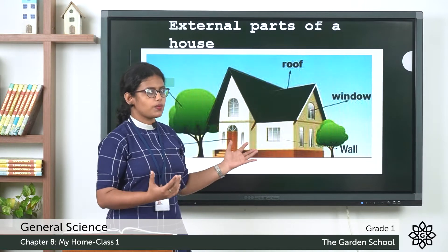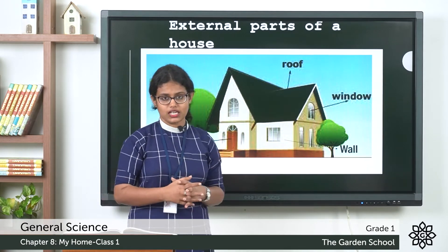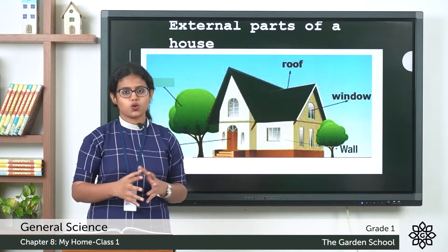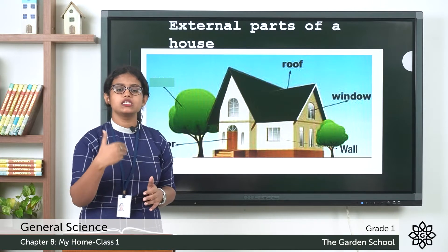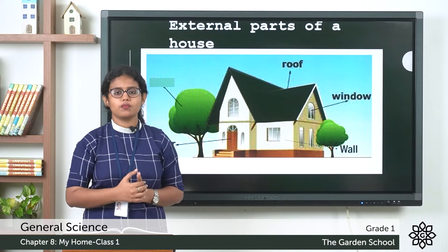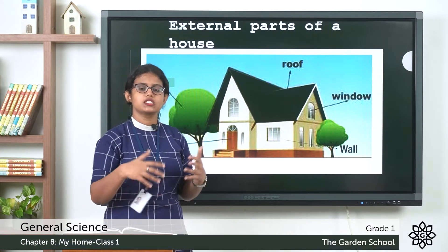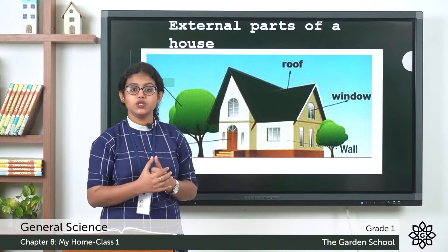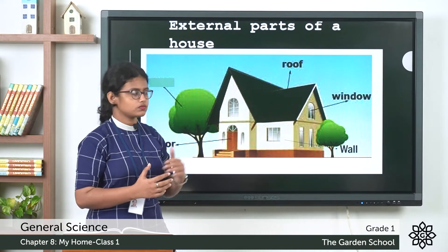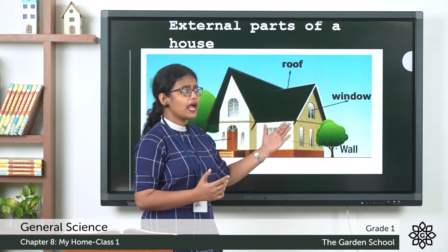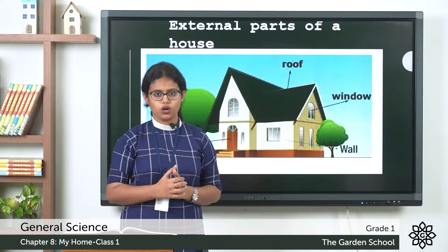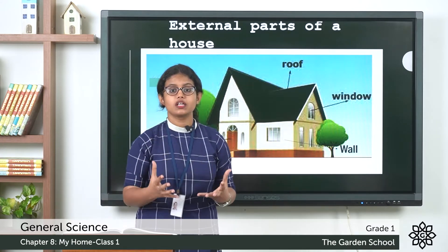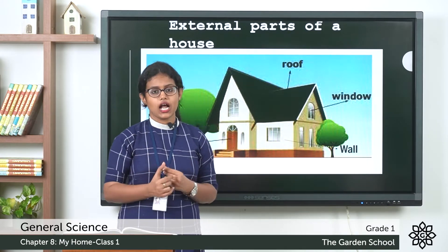So what about the next one? Doors, right? We have doors in our house. We enter the house and we exit from the house through these doors. Even our rooms have many doors. Then we have walls. So these are some of the external parts of the house.